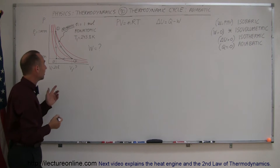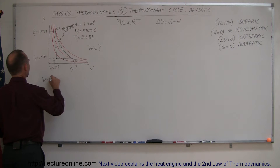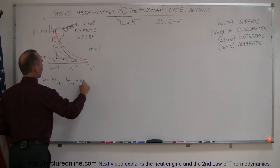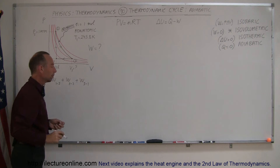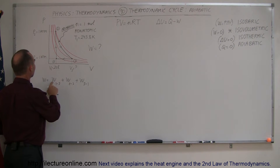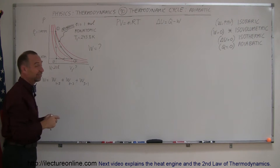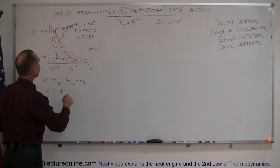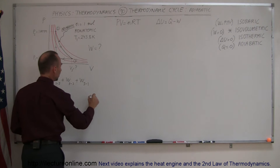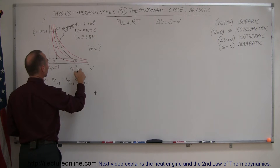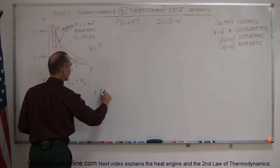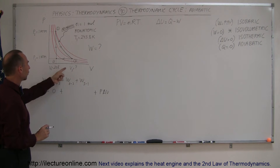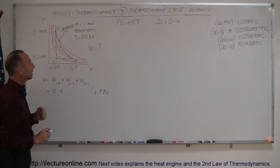The work done is simply going to equal the work done going from one to two, plus the work done going from two to three, plus the work done going from three back to one. It's not difficult for one to two because that's an isovolumetric process — the answer there is simply zero — plus the work done by the adiabatic process, plus the work done going from three to one, which is pressure times the change in volume because that's an isobaric process.